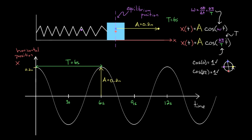That means this thing goes through a cycle every capital T—every period. That's what we wanted: we didn't want something that always had to have two pi as the period. Now we've got a function where we can plug in whatever our period is, so whenever little t makes it to capital T, the argument becomes two pi, the cosine resets, and you get a graph that resets every period.